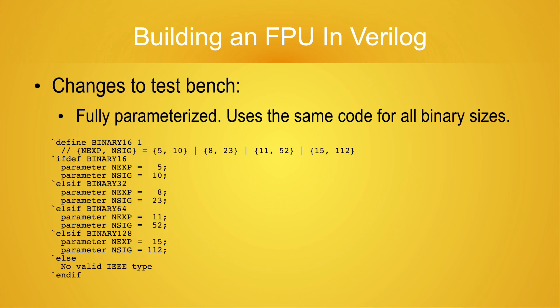The next detail is that if you look at the test bench for the multiply circuit, you'll see that I finally consolidated the four test benches for the different IEEE binary floating point formats into a single parameterized test bench. To simplify selecting valid IEEE exponent and significand field sizes, the test bench now uses a Verilog multi-branch IFDEF statement. To select a particular size, define one of the macro names BINARY16, BINARY32, BINARY64, or BINARY128. Whichever macro is defined will cause the appropriate NEXP and NSIG values to be set. If you misspell the name of the desired macro, the ELSE clause will cause a compilation error.